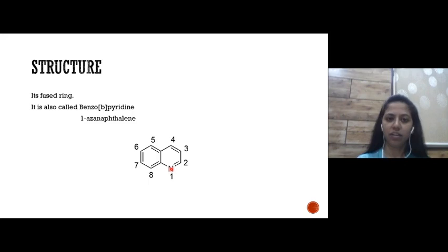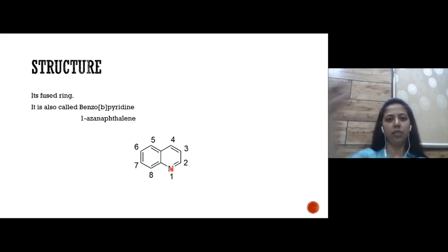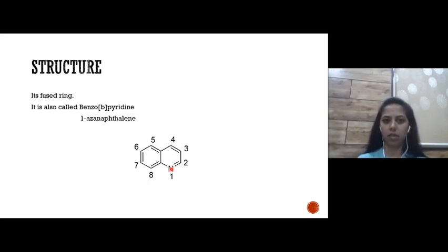Numbering starts from the heteroatom nitrogen, then in an anti-clockwise direction: 1, 2, 3, 4, 5, 6, 7, 8.